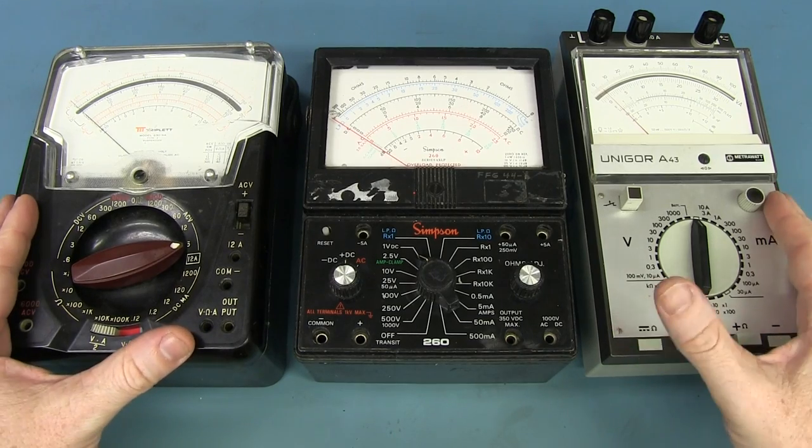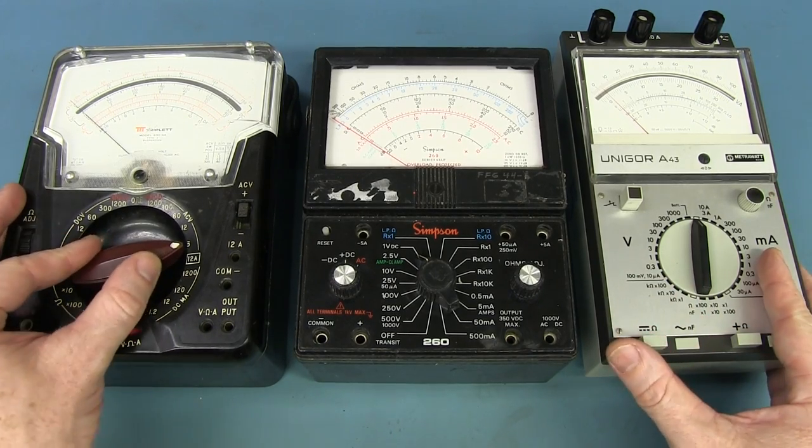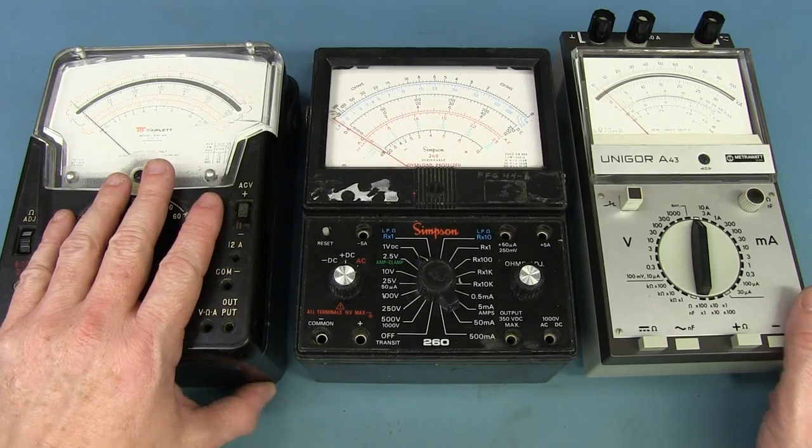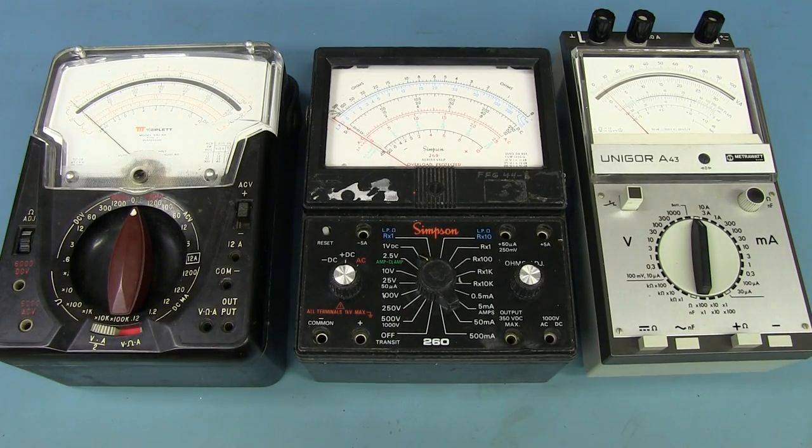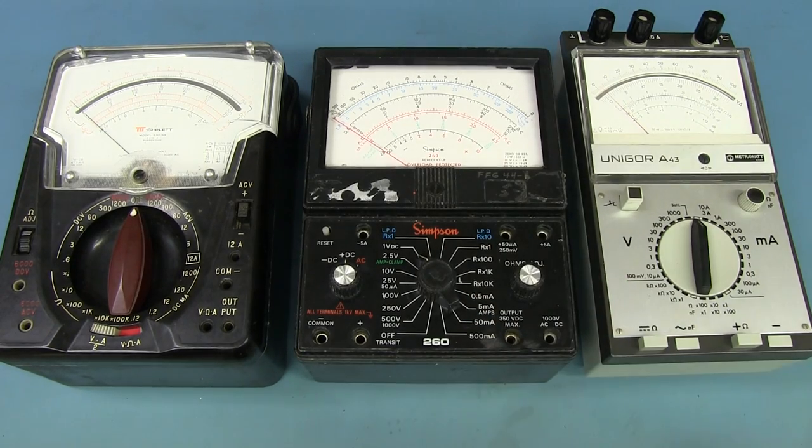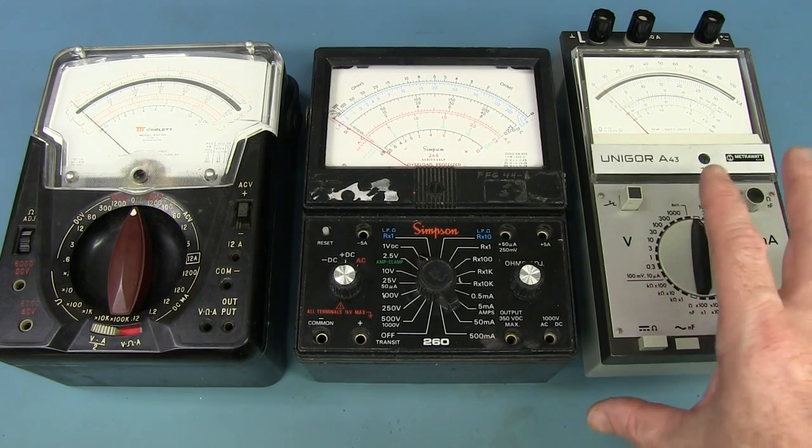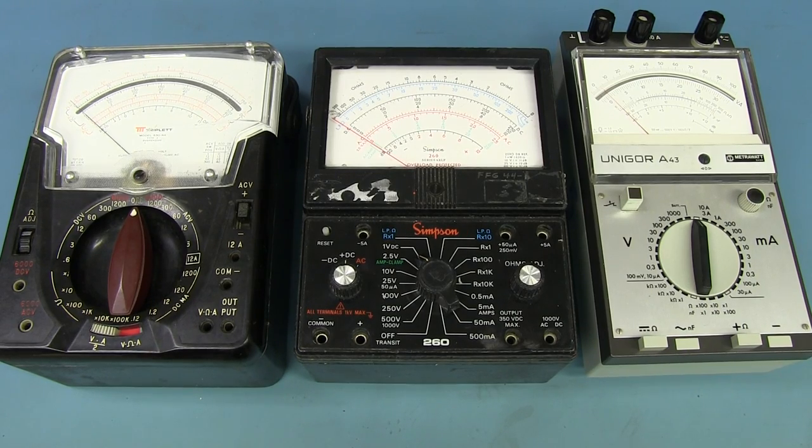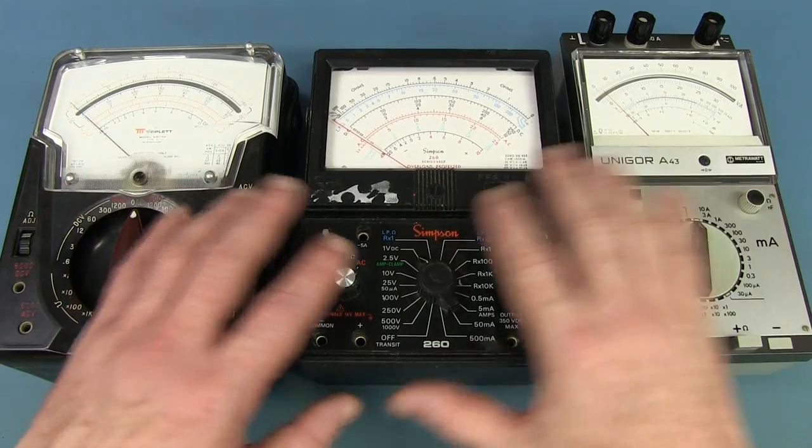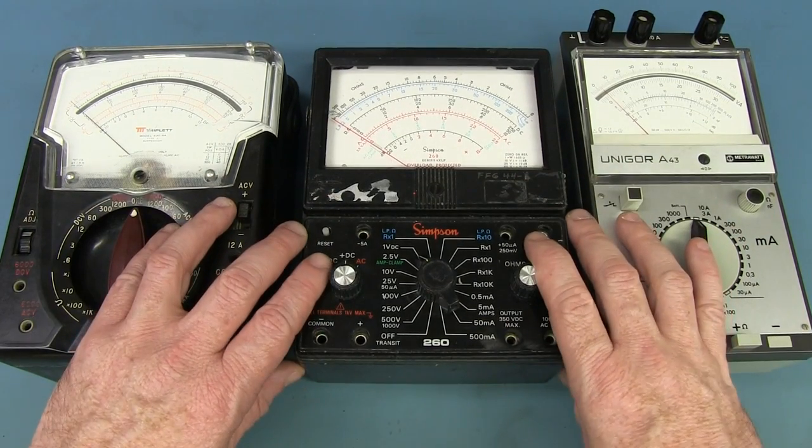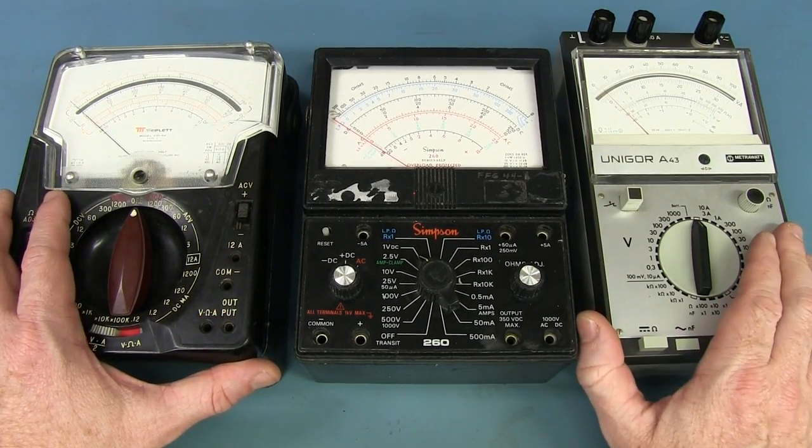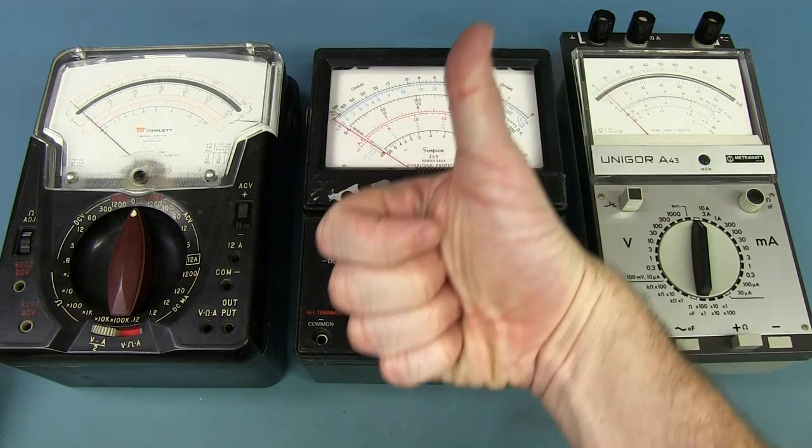So I hope you enjoyed that classic analog multimeter shootout, tear down I guess it is. Three classic analog multimeters, two made in the USA, one made in Germany. I reckon the Triplet 630NA is the best out of those bunch there. But hey, the classic Simpson 260, or probably very popular in Europe, but pretty much probably unknown outside of there, the MetroWatt Unigore A43. Which one do you think is best? Leave it in the comments. Or if you've got a better, more classic multimeter, share some teardown photos with us. The link to the EEVblog forum down below where you can post and discuss this stuff.